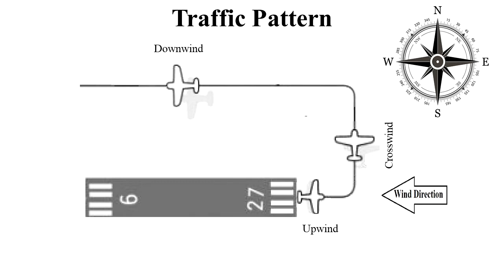Another left turn would put us on the downwind, and the point directly abeam of the runway is called the midfield downwind.